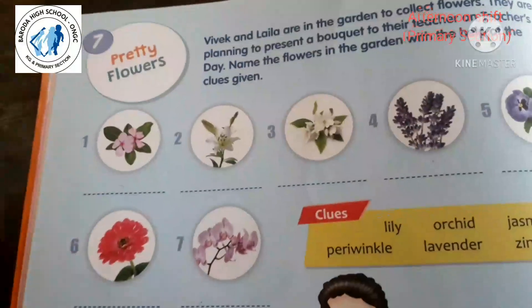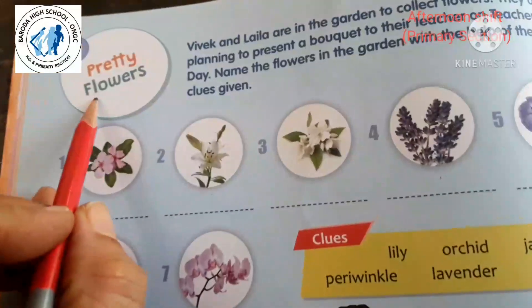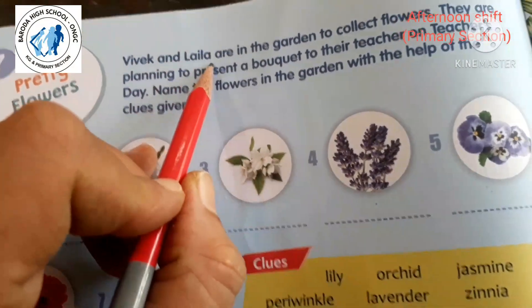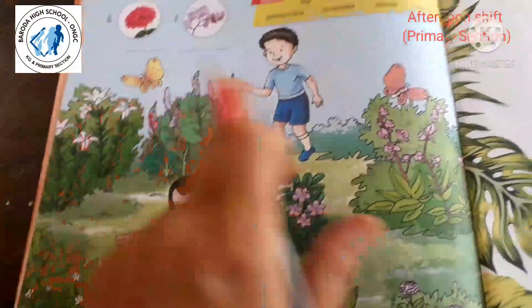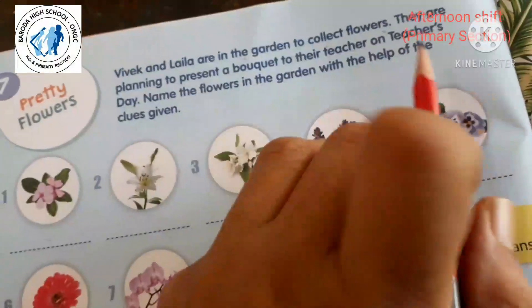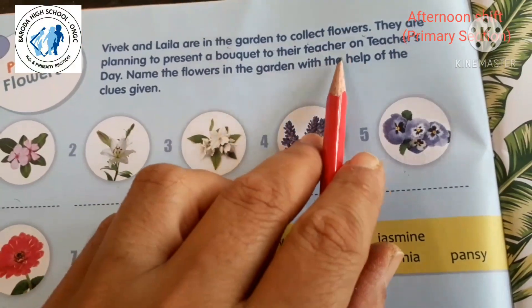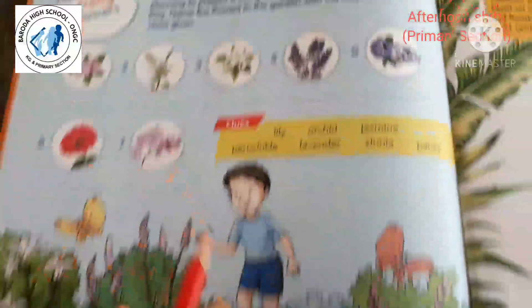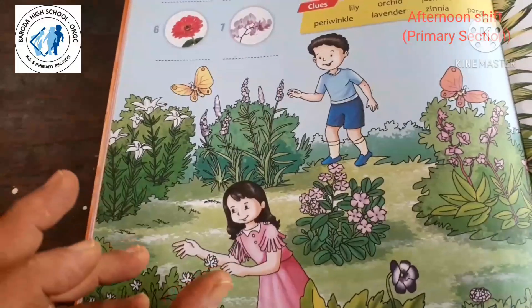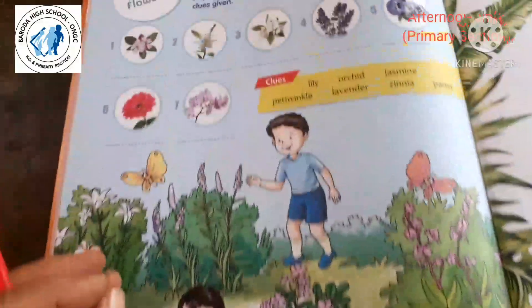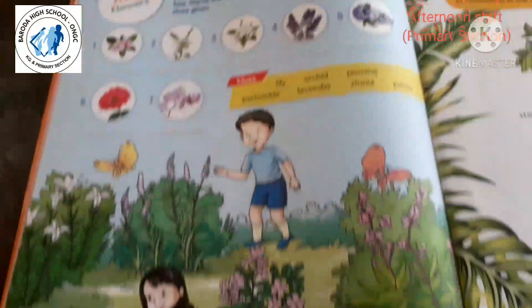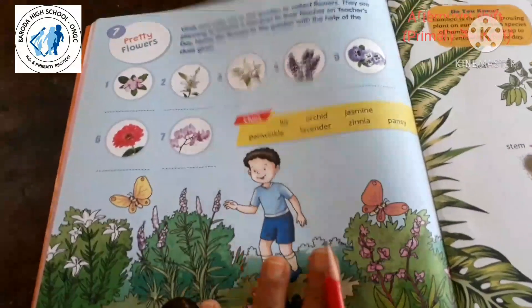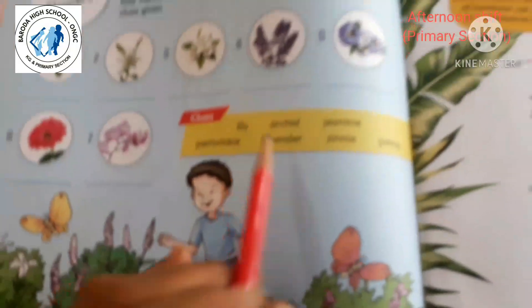Open your GK textbook, Lesson 7 on page number 8 — 'Pretty Flowers.' Vivek and Laila are in the garden to collect flowers. They are planning to present a bouquet to their teacher on Teacher's Day. So they are in the garden. We need to name the flowers in the garden with the help of the clues given.